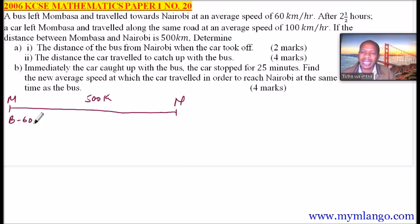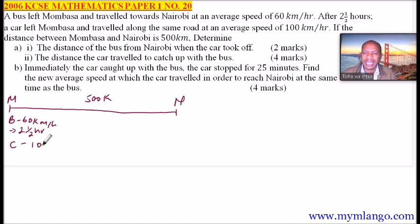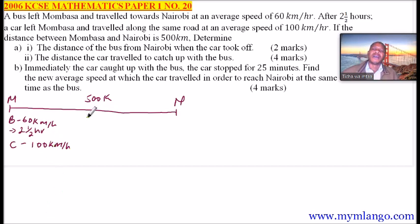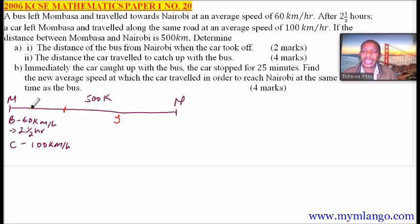The bus is travelling at 60 km per hour. By the time the car started the journey, the bus had already travelled for two and a half hours. The car is travelling at a speed of 100 km per hour. We let Y be the distance from Nairobi to where the bus was when the car started, so the distance already covered is 500 minus Y.